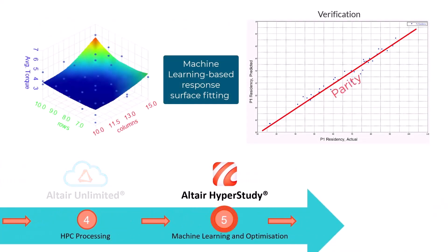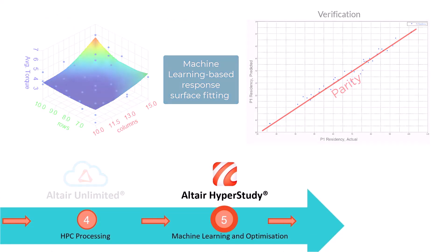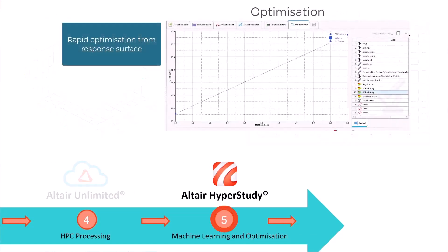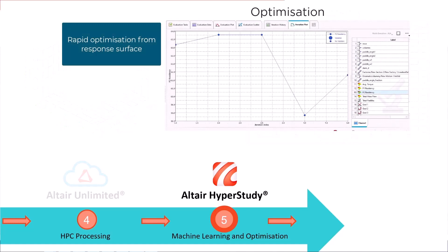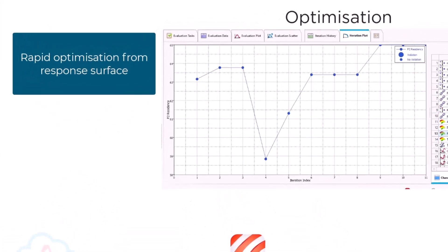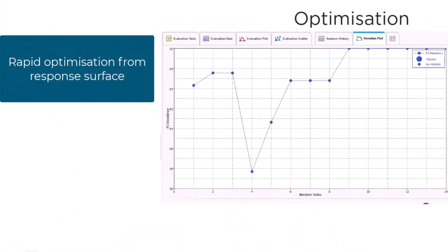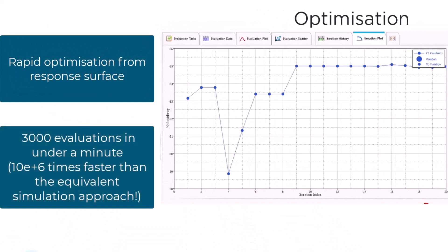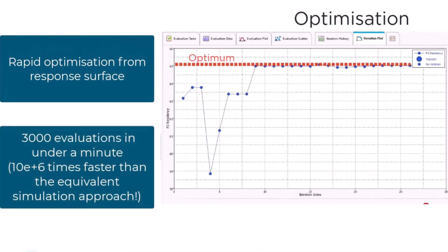Finally, HyperStudy is used to build a machine learning model on the extracted data, so that no further simulations need to be run. Metrics based on the input parameters are predicted by the model so that rapid optimization can take place, saving time and computational resources.